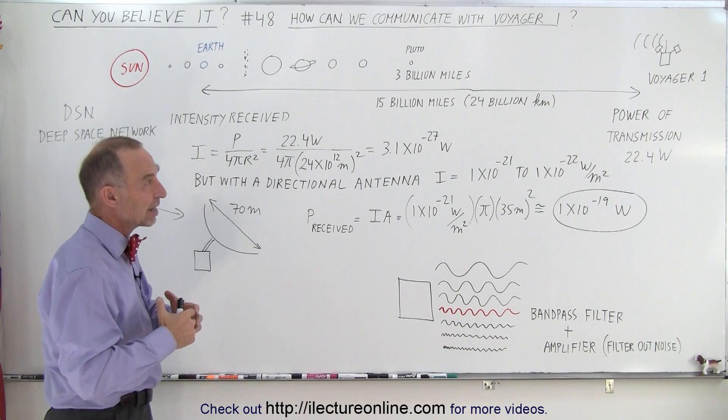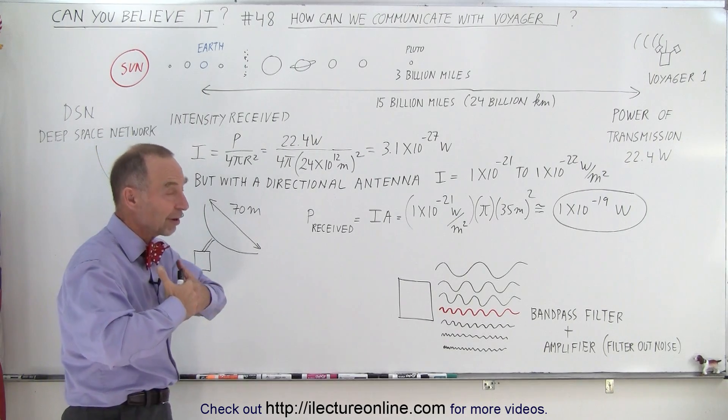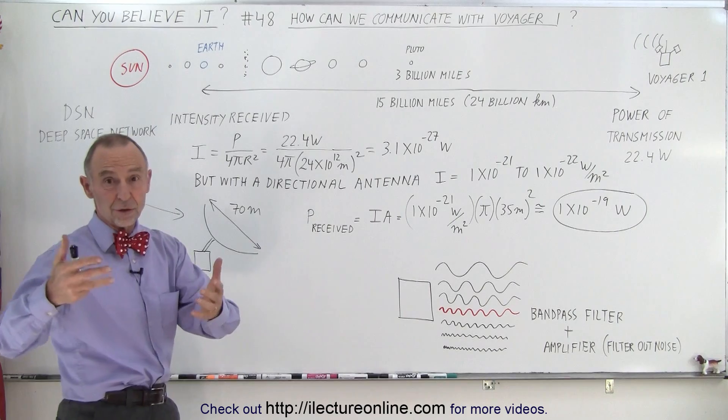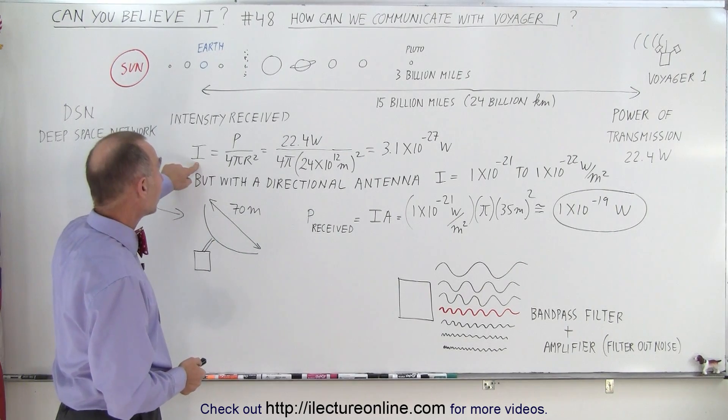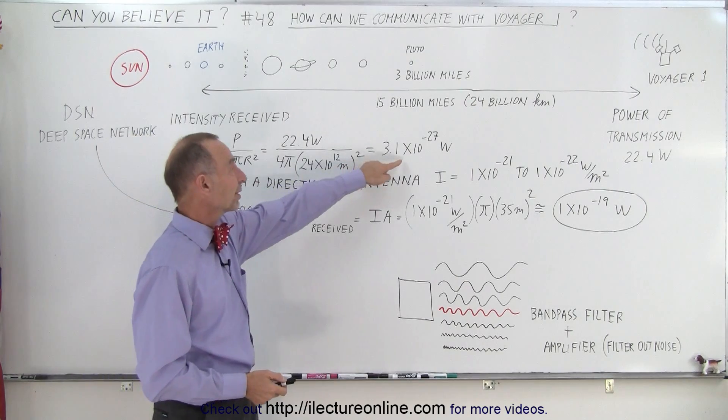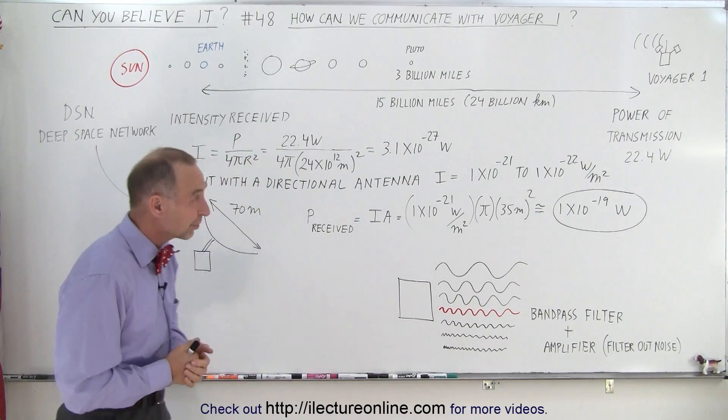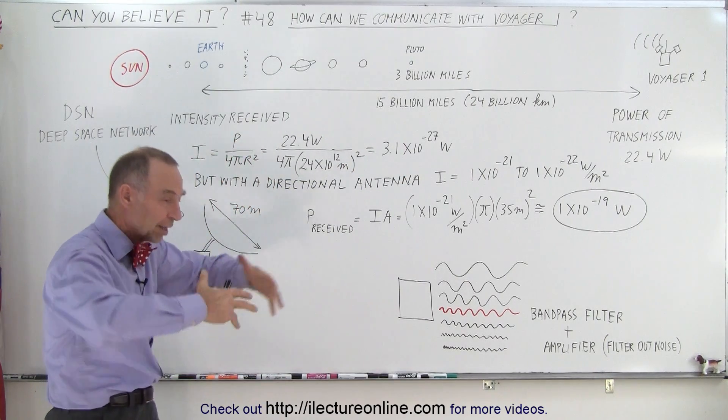Now if it was an antenna that could transmit in all directions, such as a radio antenna, then the signal strength intensity would be down to 3.1 × 10^-27 watts because it would spread out in all directions.